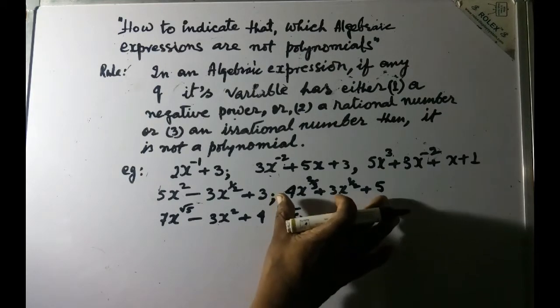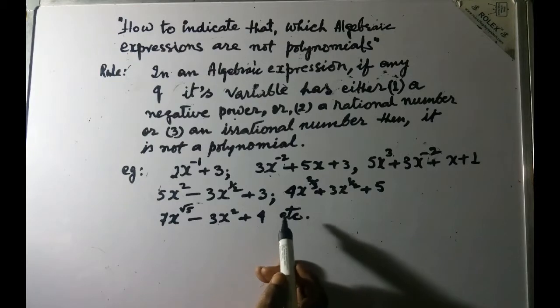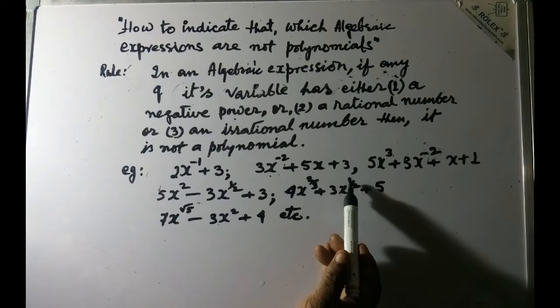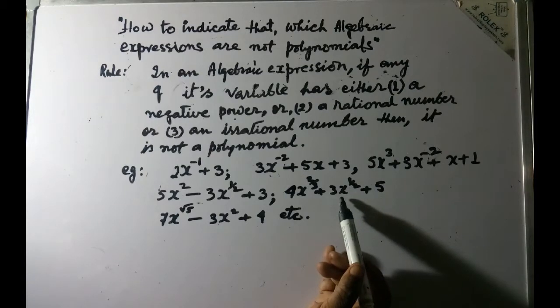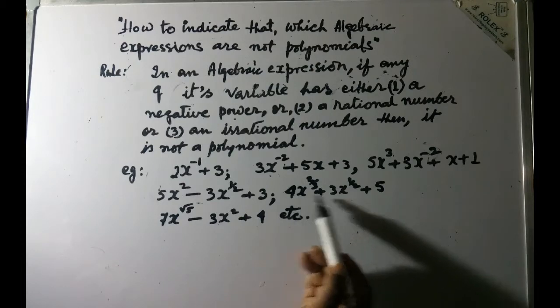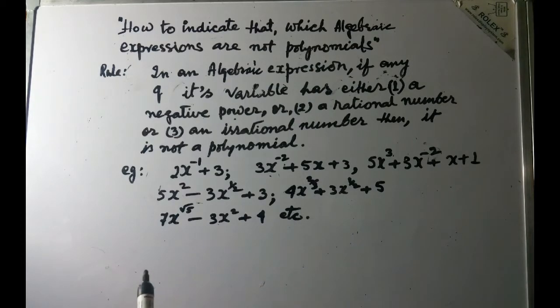So again here you see in the second term also you are having 1 by 2 as power in the variable x, so for sure this cannot be a polynomial according to the rule.